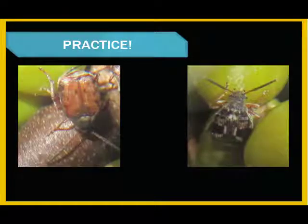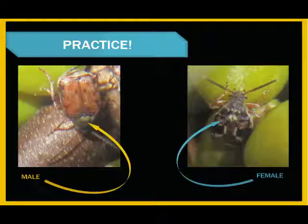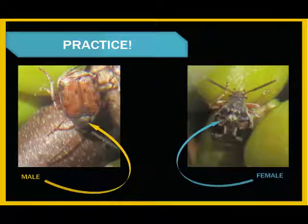Now for some practice. Let's see if you can tell the difference between the males and the females. Take a few seconds to look at these images and determine which is the male and which is the female. The beetle on the left is a male, while the beetle on the right is a female. Still unsure? Let's do another round.